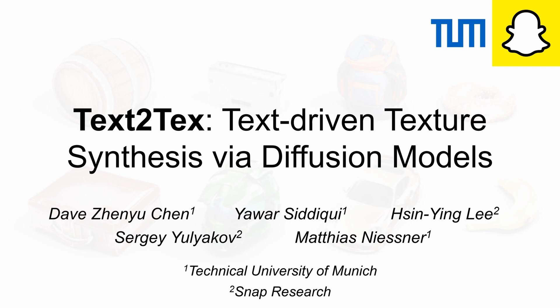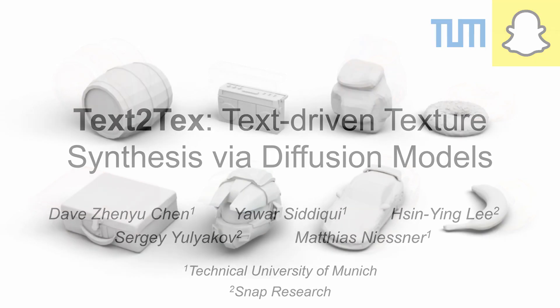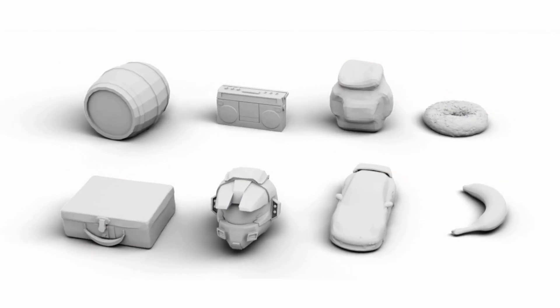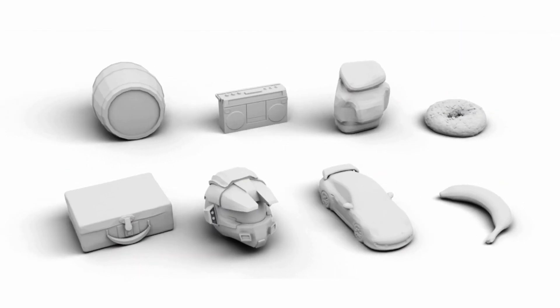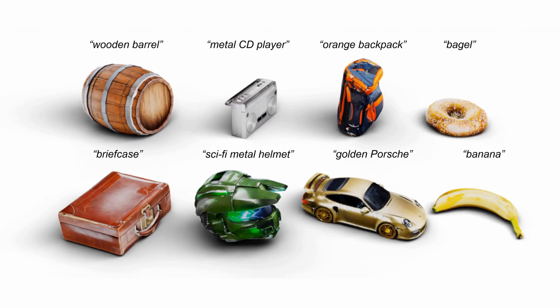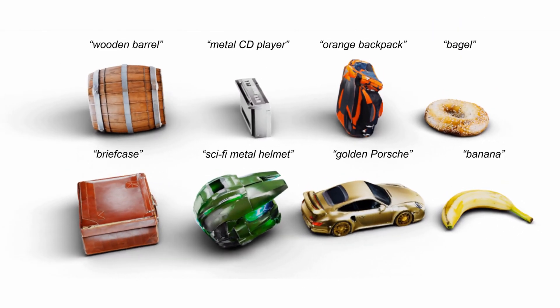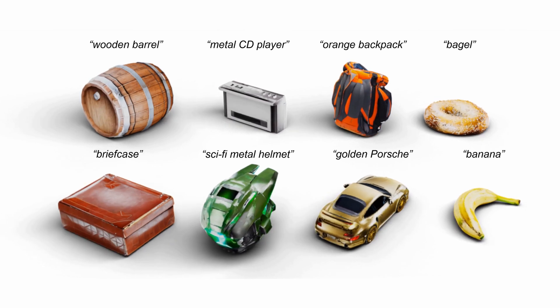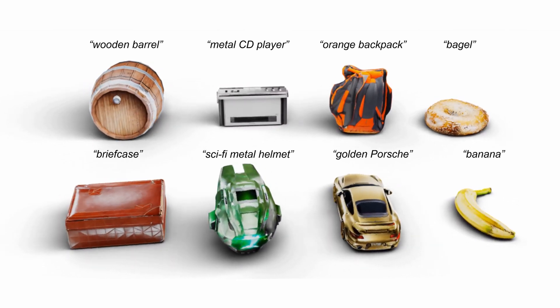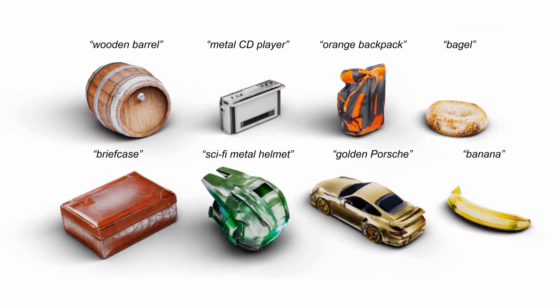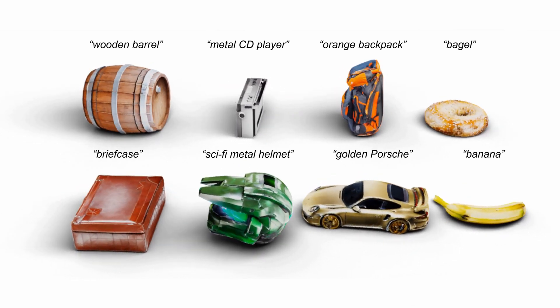We present Text2Text, a novel method for texture synthesis via diffusion models. Given an untextured mesh and a text prompt as input, our method generates a high-quality texture for the object.